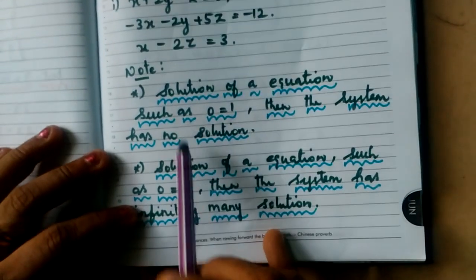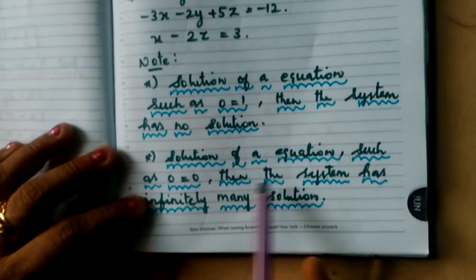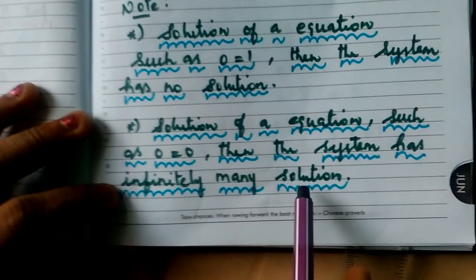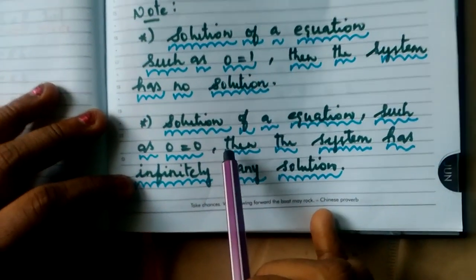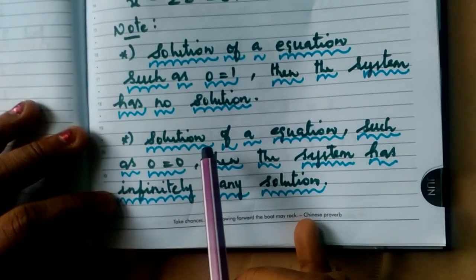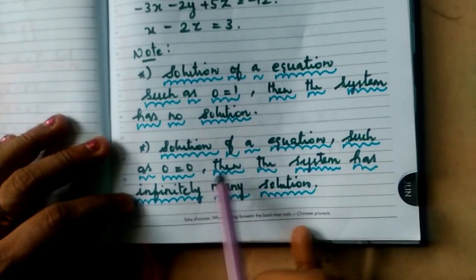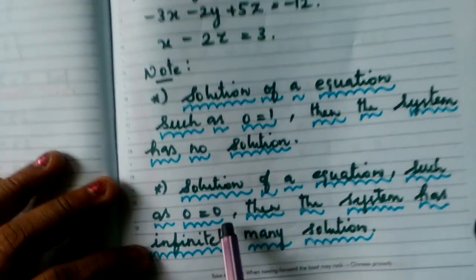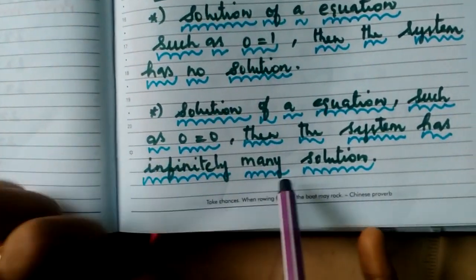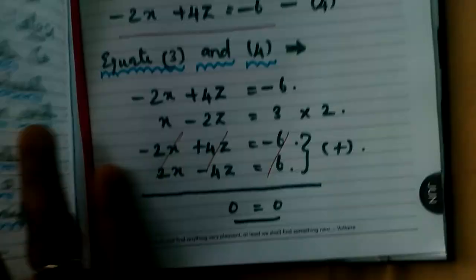The same way, if you are getting the solution 0 equal to 0, then the system has infinitely many solutions. Understood, children? This is how they are telling us just to discuss the solution, what kind of nature you are getting. So what is that? 0 is equal to 1 means it has no solution. 0 is equal to 0 means it has many infinitely solutions.